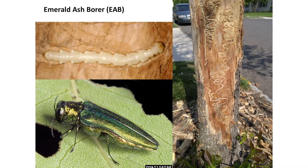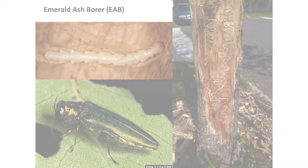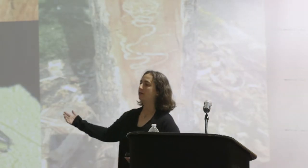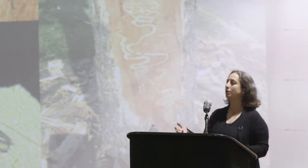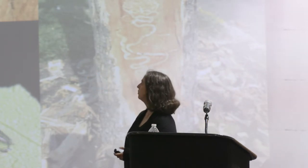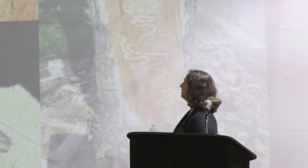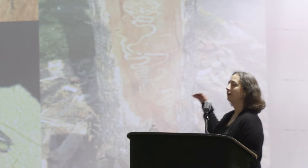We'll start with emerald ash borer. It's a wood-boring beetle, exotic invasive, native to Asia. The actual beetle is much, much smaller than shown. I have samples here, so I'm hopeful that at lunchtime everyone will stop by to see the actual size of both insects. It is the larval phase that does the damage. The larva feed on the cambium of ash trees — all species of true ash. The genus Fraxinus is what's affected. The larva tunnel S-shaped galleries through the cambium layer.